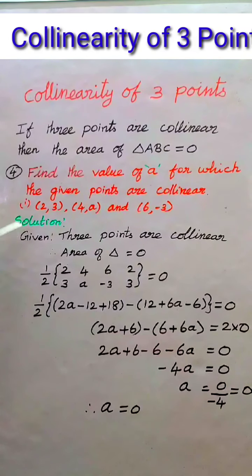Here given that the 3 points are collinear, therefore area of the triangle is equal to 0. So we have to find the area of the triangle.